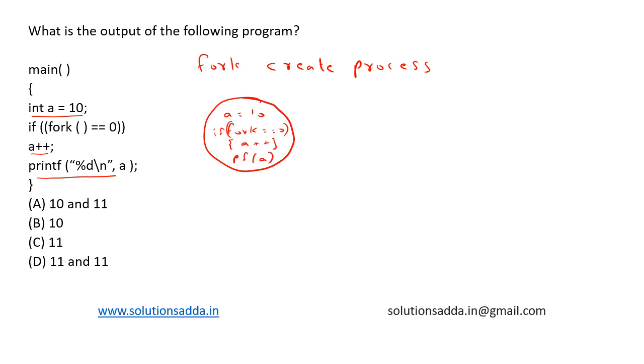Suppose if fork equal to equal to 0, that is if the fork process call is successful, it creates a child process with the same instance or the code. Then we have a equal to 10, fork equal to equal to 0, then we have a++, then we print the value of a.